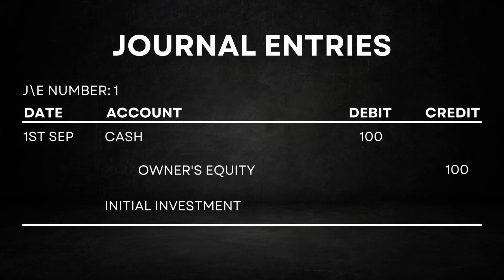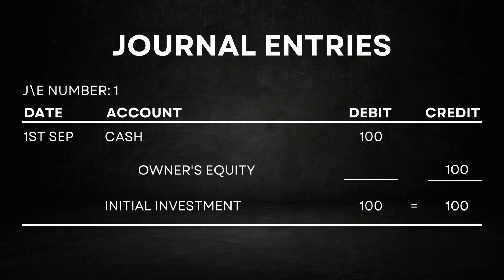Remember, we are utilizing the principles of double-entry bookkeeping. This means that every journal entry must have at least two sides — a debit and a credit. The total amounts in the debit and credit columns must match precisely to ensure the accounting equation remains balanced. If you are using accounting software like QuickBooks or similar programs, they typically enforce this requirement, preventing you from posting an entry with unmatched debits and credits.